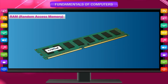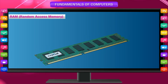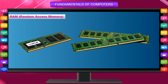RAM, or Random Access Memory, stores data and programs that are currently being used by the computer for quick access. The RAM can be read from and written onto, and therefore it is also known as read-write memory.